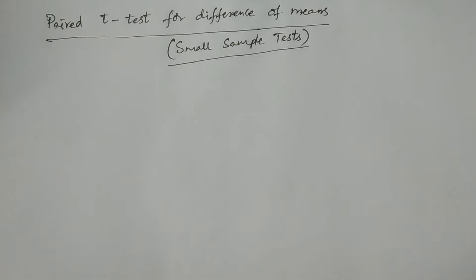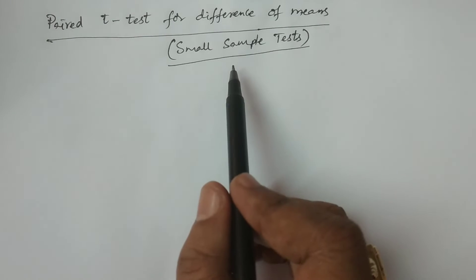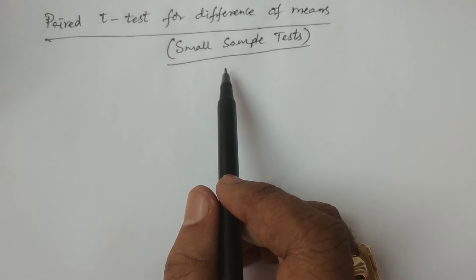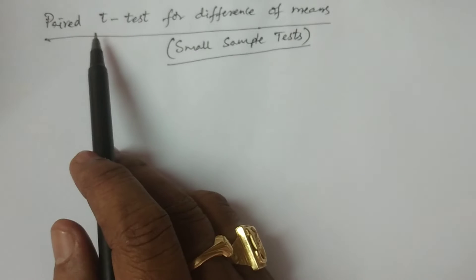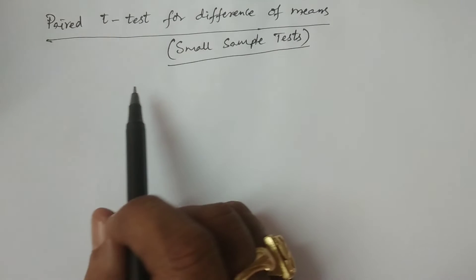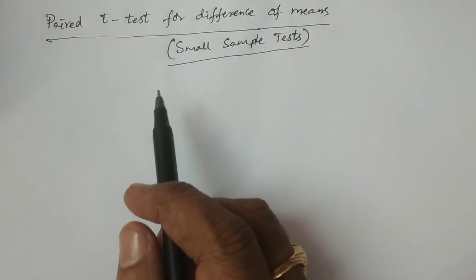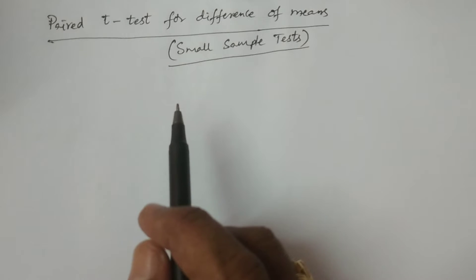Welcome to BSA statistics students. In this lesson, I discuss the paired t-test for a difference of means. It is also a small sample test. All t-tests concerning t, chi-square, and F distribution tests are small sample tests.